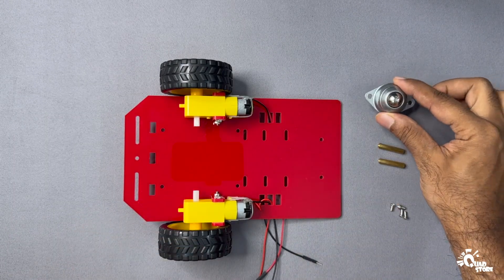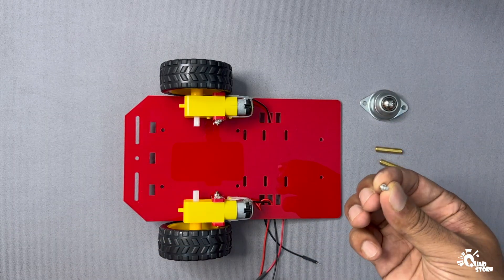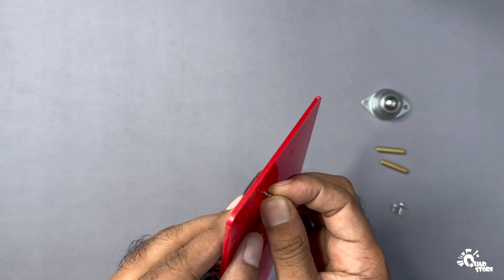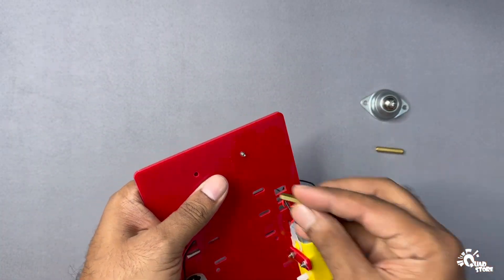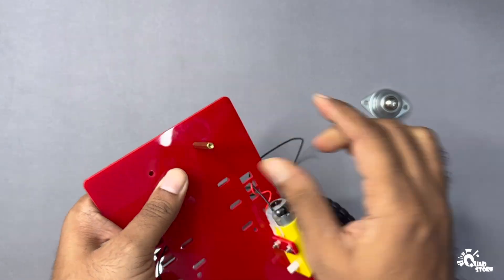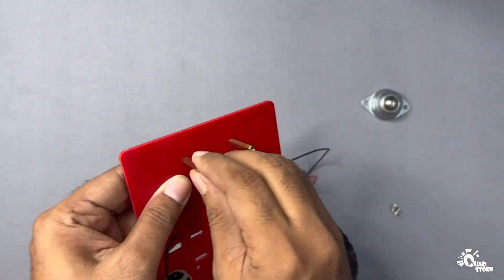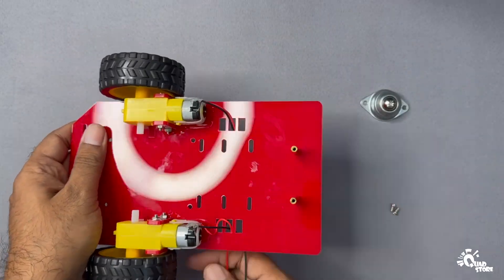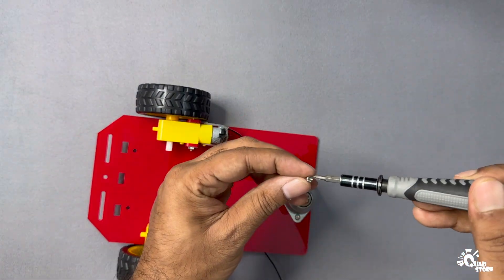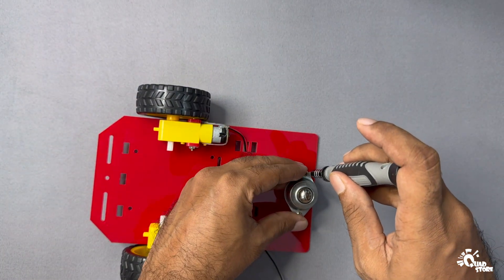Now let's install the rear caster wheel. Move to the rear end of the chassis. Take a small screw and insert it through one of the holes. Use a hex nut on the other side to tighten it. Do the same for the second hole. Align the caster wheel in place and fasten it using two screws to complete the rear wheel assembly.